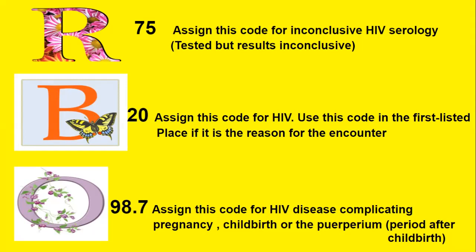Code O98.7 is assigned for HIV disease complicating pregnancy, childbirth, or the puerperium — the period after childbirth.